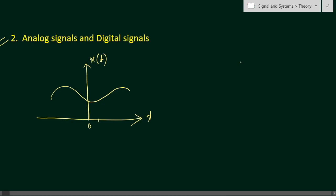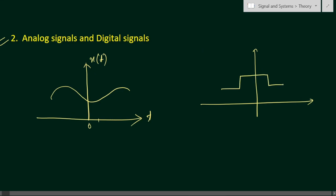In the case of a digital signal, the signal has some discrete or finite number of amplitude levels. For example, the signal might take only values like minus two, minus one, zero, plus one, plus two. So the definition is: if the signal takes a finite number of values or finite steps of values, then it is called a digital signal.